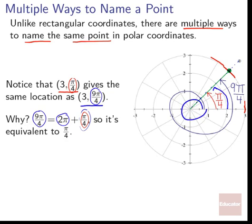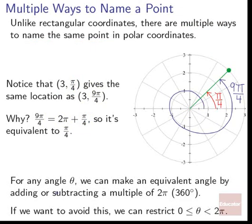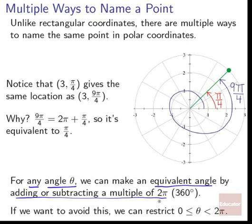This is something special about polar coordinates — we can lap any given theta. For any angle theta, we can make an equivalent angle by adding or subtracting a multiple of 2 pi. You add 2 pi, you do one loop counterclockwise. You add 4 pi, you do two loops. You add negative 2 pi, you do a loop clockwise. Adding a multiple of 2 pi gets you back where you started, just like with the unit circle where 2 pi and 0 are the same angle.